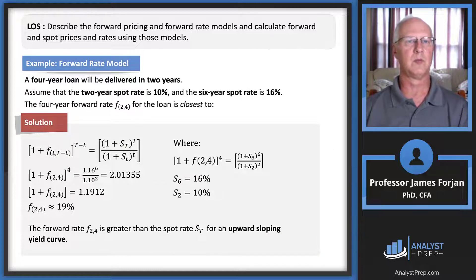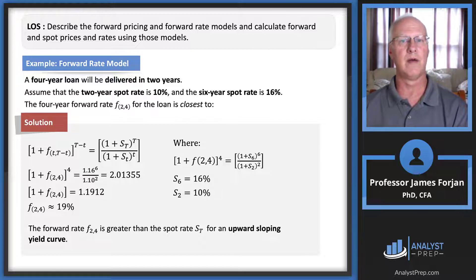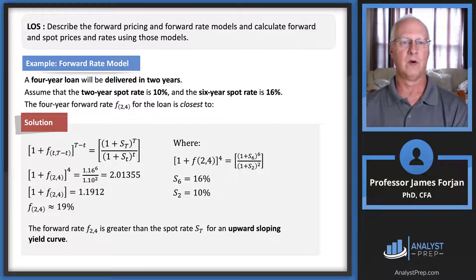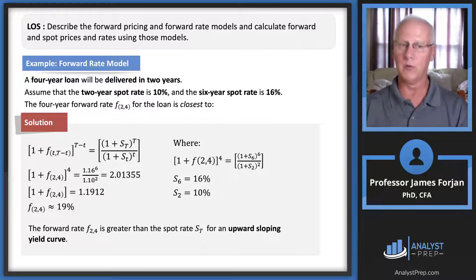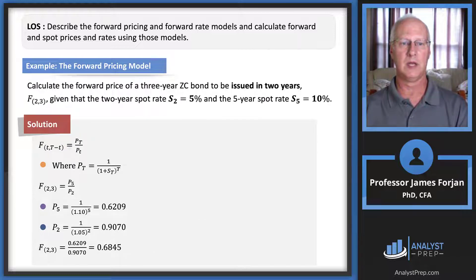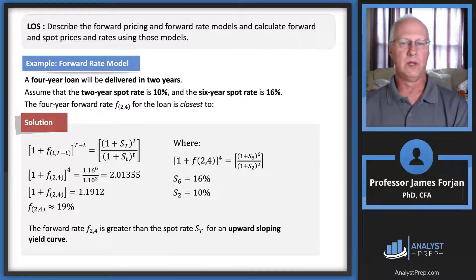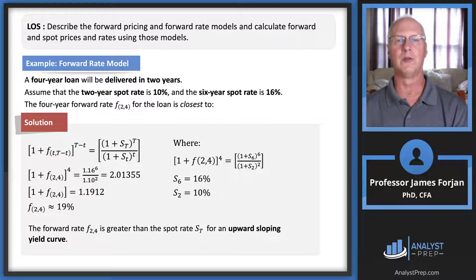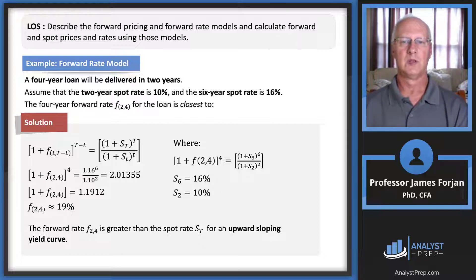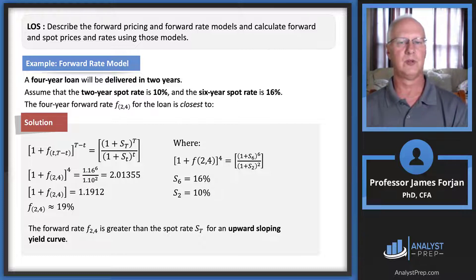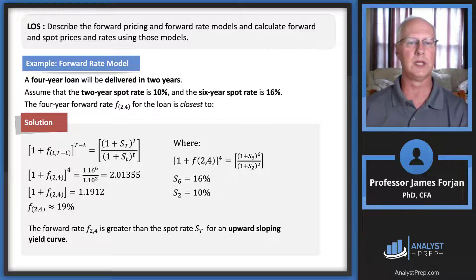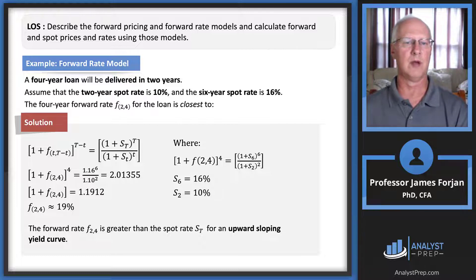Working through an example: a four-year loan to be delivered in two years. We observe a two-year spot rate of 10% and a six-year spot rate of 16%. Taking the ratio — (1.16)^6 over (1.10)^2 — we get 1.1912, and subtracting 1 gives a forward rate of approximately 19%.